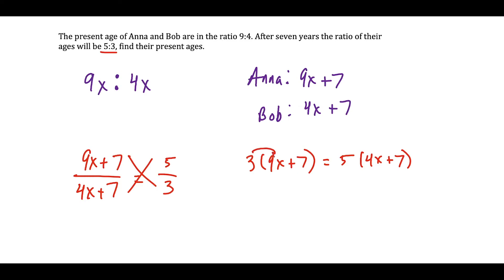We could distribute the 3 to the left side, and we have 27x plus 21 is equal to, distribute the 5, we have 20x plus 35.